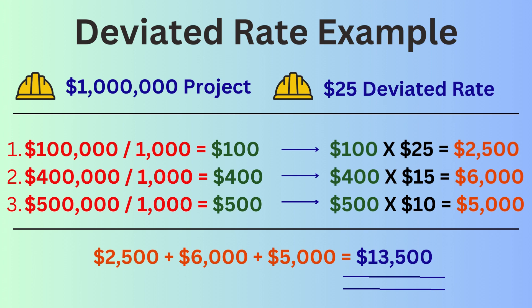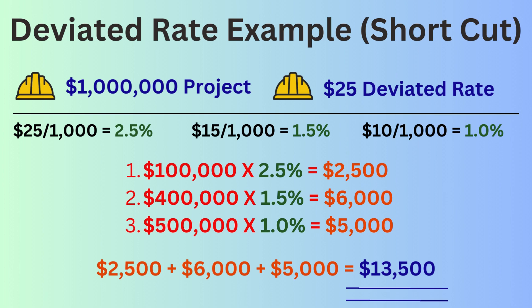Here's how that would be calculated using our $1 million performance bond example. First, take the first $100,000 of value, divide by 1,000 to get 100, then multiply by $25 — that gives $2,500. Next, take the next $400,000 of contract value, divide by 1,000 to get 400, then multiply by the $15 rate, giving $6,000. Finally, take the remaining $500,000, divide by 1,000 to get 500, multiply by $10, giving $5,000. Adding $2,500 plus $6,000 plus $5,000 gives a performance bond cost of $13,500 for a $1,000,000 surety bond.